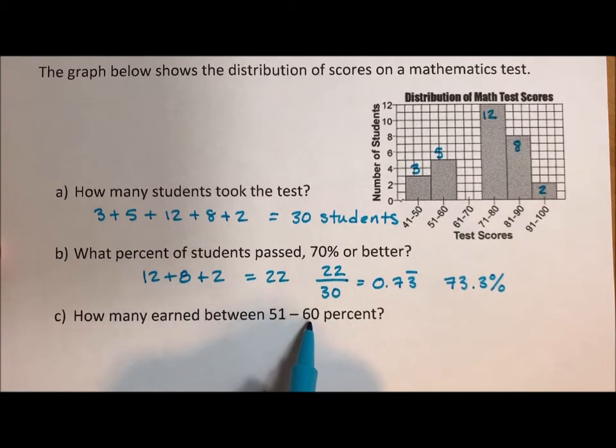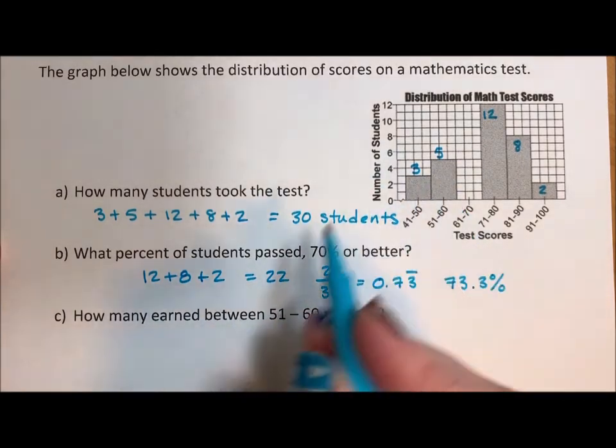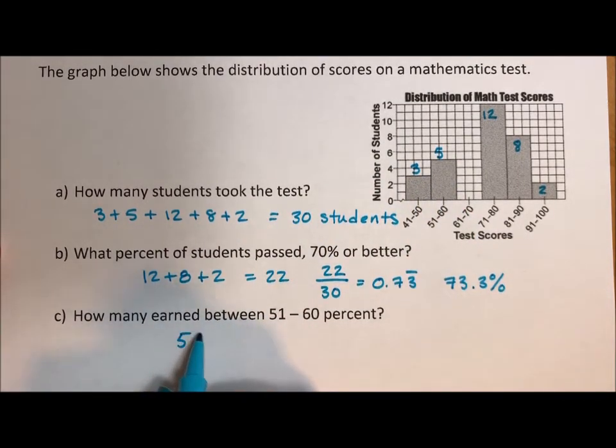How many earned between 51 and 60%? 51 and 60, that would be five students.